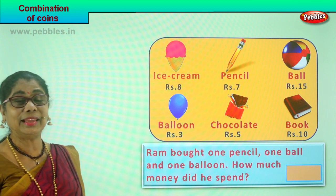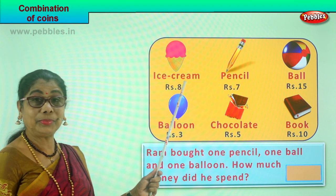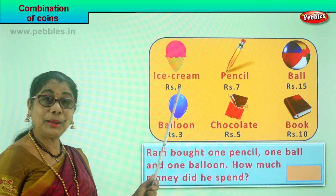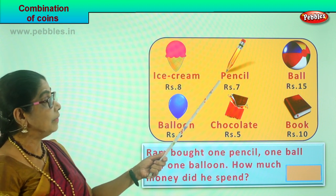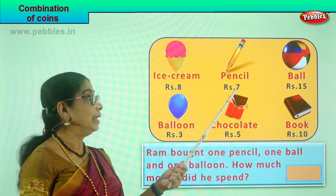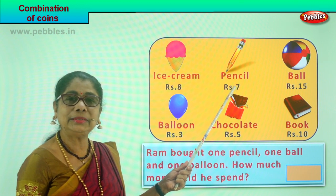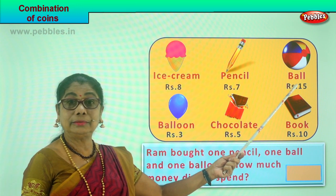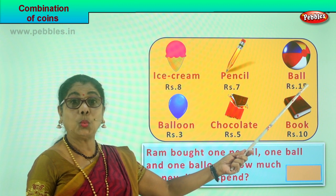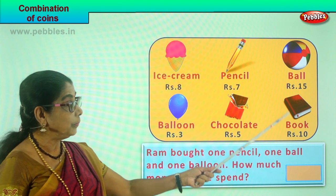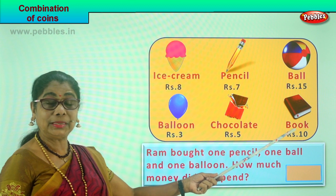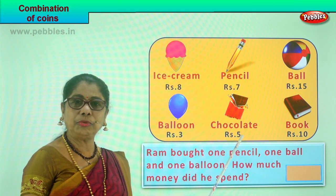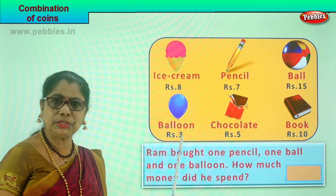Here we are in a shop with lots of things displayed. We have an ice cream — one ice cream is eight rupees. That is five rupees plus two rupees plus one rupee. Here is a pencil for seven rupees — a five rupee coin and a two rupee coin. There is a ball for fifteen rupees — one ten rupee coin plus one five rupee coin. A pocket book for ten rupees — a ten rupee coin or two five rupee coins. A chocolate for five rupees, and a balloon for three rupees — two rupees plus one rupee.